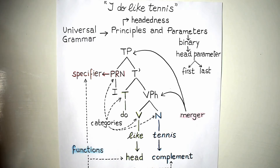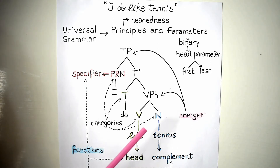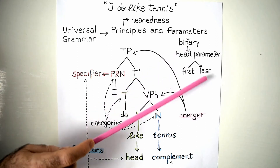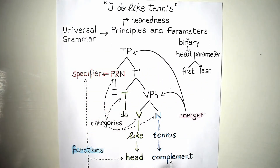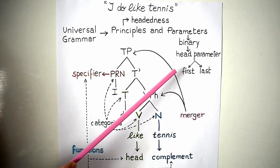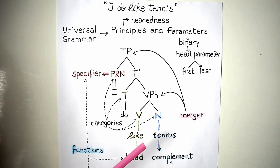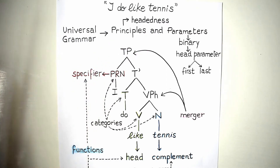Heads in English are always on the left and complements are always on the right. The reason why this is the case is that English is a head-first language. Head-first languages are either head-first or head-last — that is, the heads are either on the right or on the left. English is a head-first language, where 'first' means left, and this means that you will be saying things like 'like tennis' rather than 'tennis like.' There are other languages, such as Japanese, which is a head-last language, so the head will be on the right, not on the left.